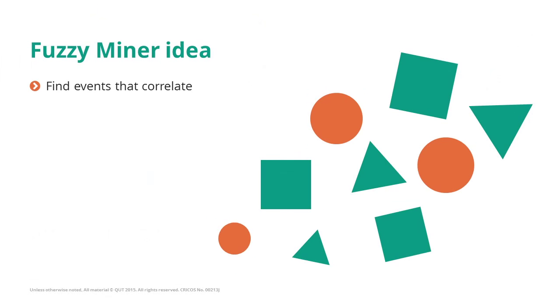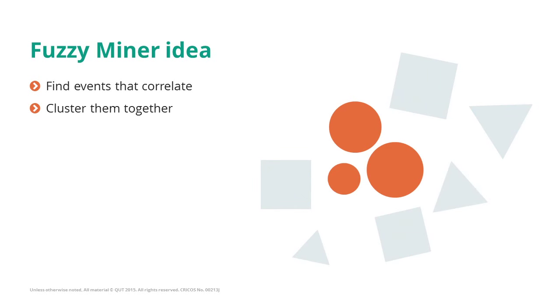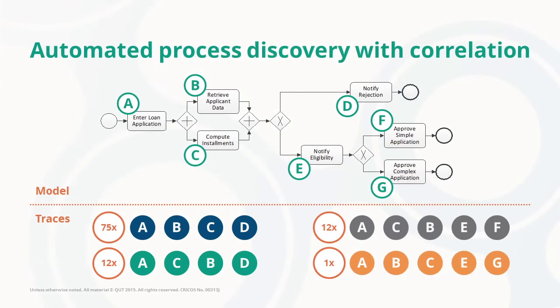This means correlation is the first step that we need to do. And based on these correlations, we can then define clusters. You see here again the example of the result that we got from the heuristic miner, simply to illustrate this idea.